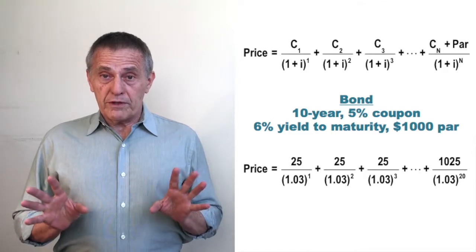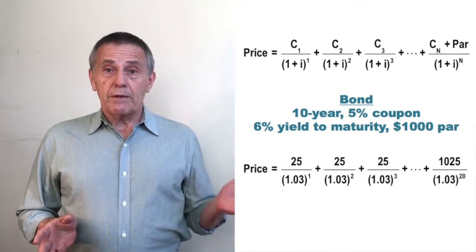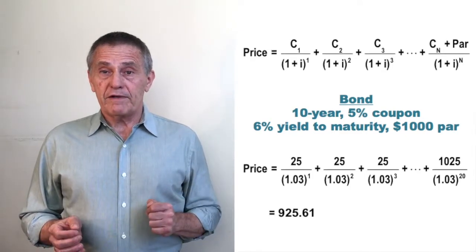And by performing the operations to get the present value of each of the cash flows and summing them, we'd end up with a price of $925.61.